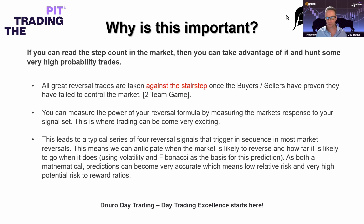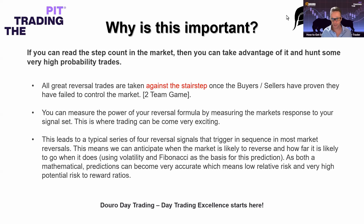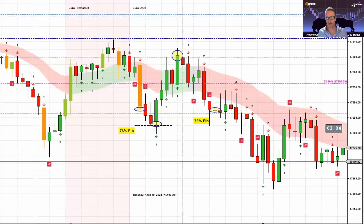Once you've transitioned to a five-minute chart, it basically leads to a series of four different reversal signals that can trigger in sequence. If you get the first reversal signal you'll typically end up with the second, then the third, then the fourth — and that's generally how the market moves, and it's been moving like that since 2008. That means we can actually anticipate when the market is likely to reverse and also anticipate how far that reversal is likely to go. With a little training, you can use Fibonacci to predict where the market is likely to push to, making those predictions very accurate.